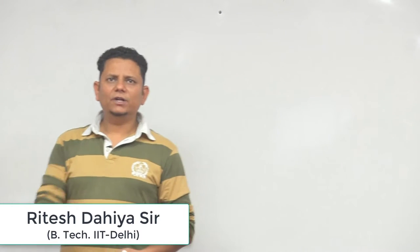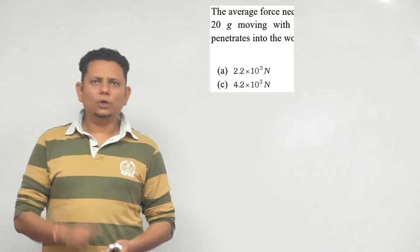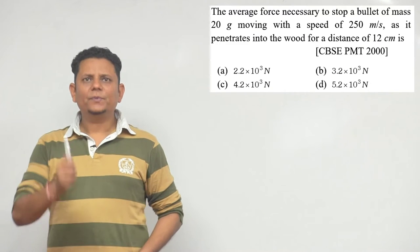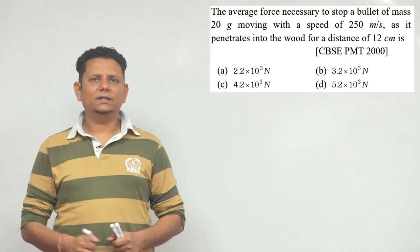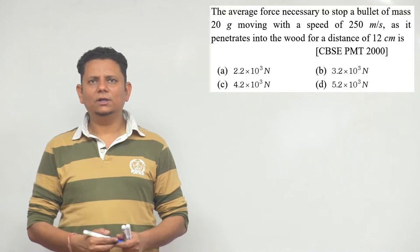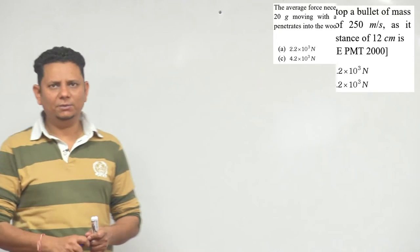2000 ka sawal hai. It says the average force necessary to stop a bullet of mass 20 gram moving with a speed of 250 meter per second as it penetrates into the wood for a distance of 12 centimeter will be.